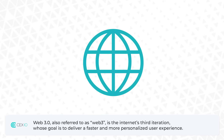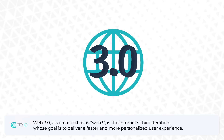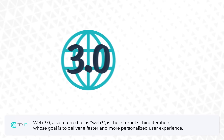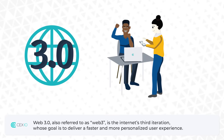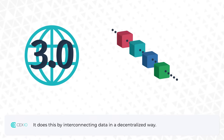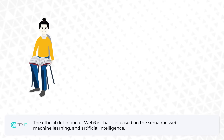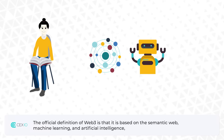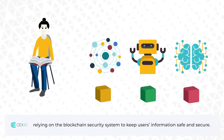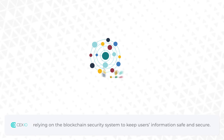Web 3.0, also referred to as Web 3, is the Internet's third iteration whose goal is to deliver a faster and more personalized user experience. It does this by interconnecting data in a decentralized way. The official definition of Web 3.0 is that it is based on the semantic web, machine learning and artificial intelligence, relying on the blockchain security system to keep users' information safe and secure.